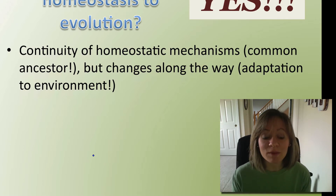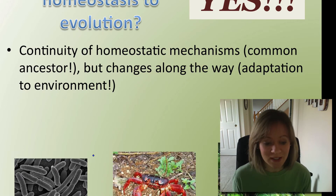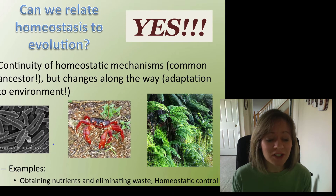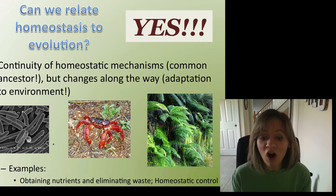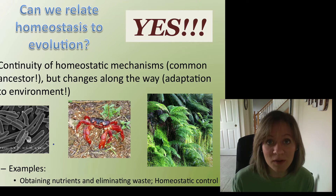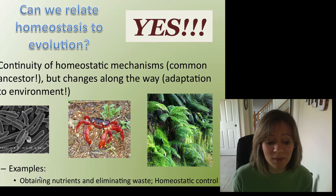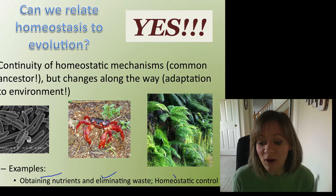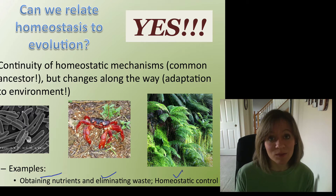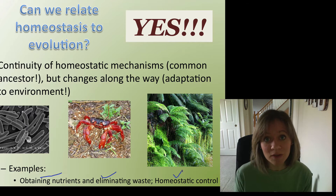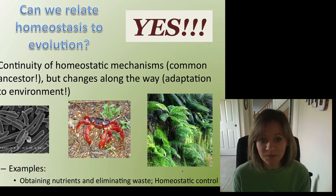We're going to look at lots of examples: bacteria, crustaceans, plants, animals, fungi — all of these have homeostatic mechanisms. They all have to obtain nutrients, they all have to eliminate waste, and they all have to control their internal balance. We're going to see that we have similar ways of doing so, even though we're very different.